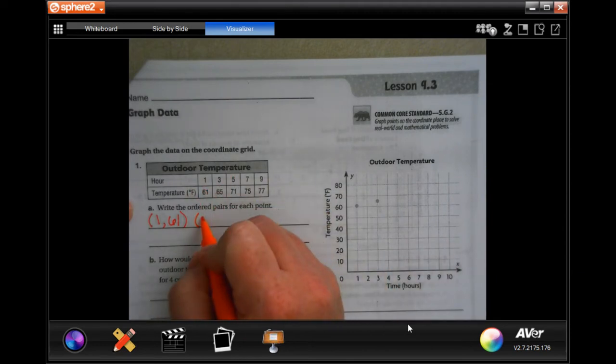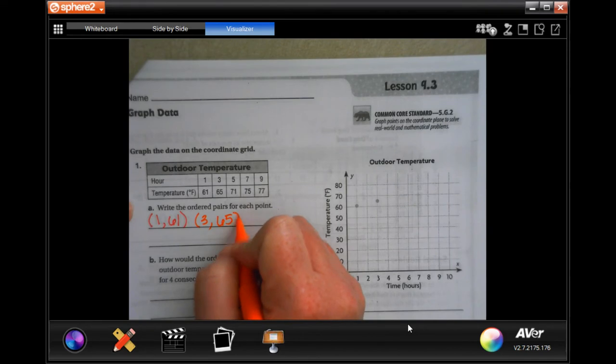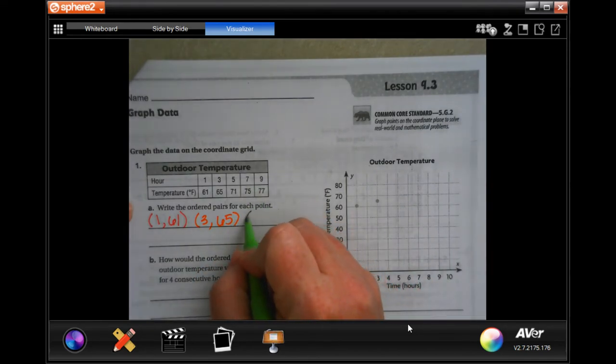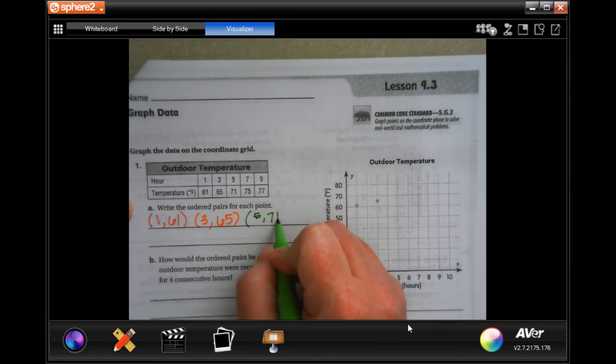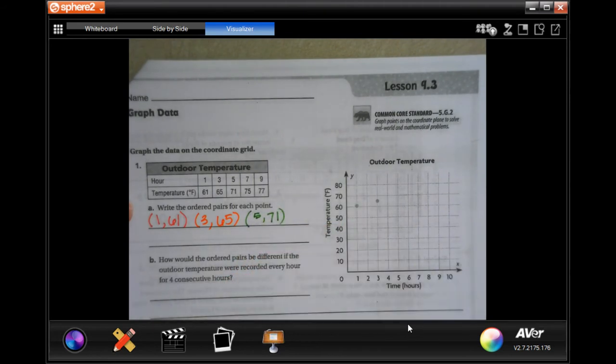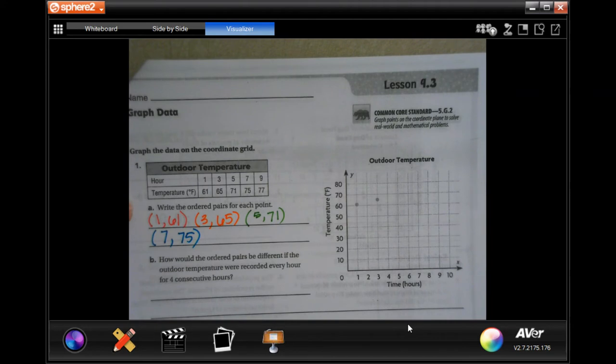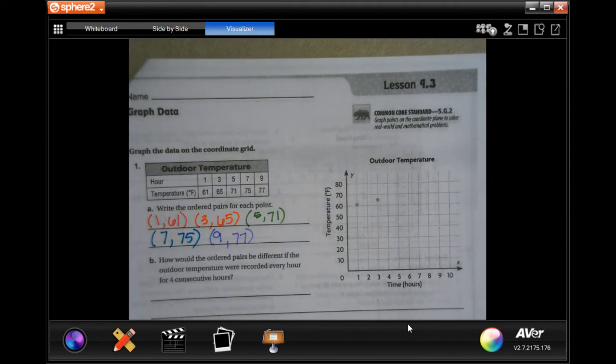So top then bottom. Top then bottom. Top then bottom, and top then bottom. So now, how would the ordered pairs be different? Because the outdoor temperature will be reported every hour for four consecutive hours.